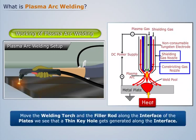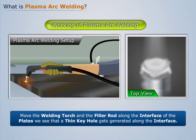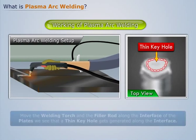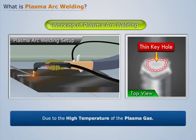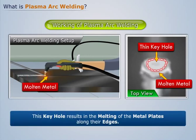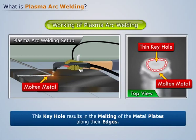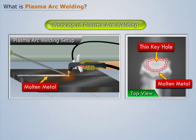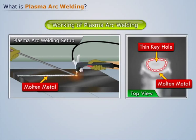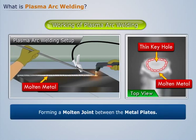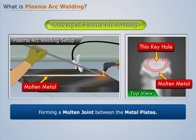The plasma gas is also protected by the supply of argon gas through the gap between the constricting nozzle and the shielding gas nozzle. Now, as we move the welding torch and the filler rod along the interfaces of the plates, we see that a thin keyhole gets generated along the interface due to the high temperature of the plasma gas. This keyhole results in the melting of the metal plates along their edges. When we move the filler rod and the welding torch along the interface, the melted metal flows back into the keyhole, thus forming a molten joint between the metal plates.